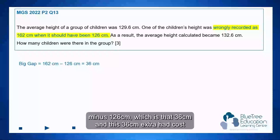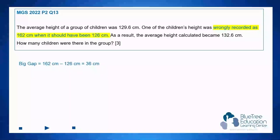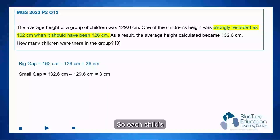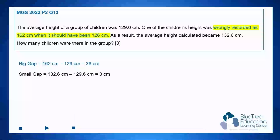This 36 cm extra had caused everybody's average height to increase from 129.6 to 132.6. So each child's average has increased by 3 cm due to the wrongly recorded number.